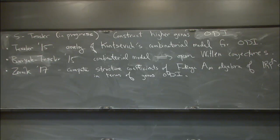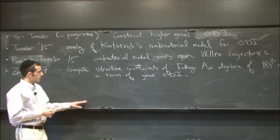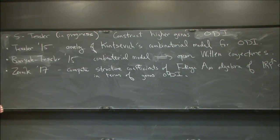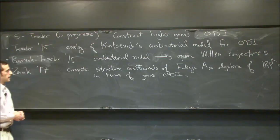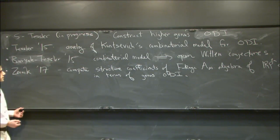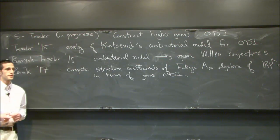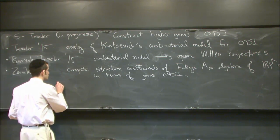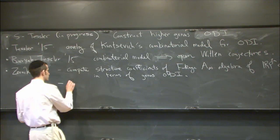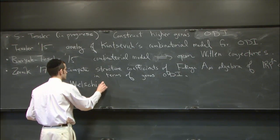Maybe sometimes people are used to thinking of this particular Lagrangian as being sort of trivial in the Fukaya category. On the other hand, if you consider things over the Novikov ring, it becomes very rich. In particular, you can extract from this a lot of numerical invariants — for example, Welschinger's real enumerative invariants.